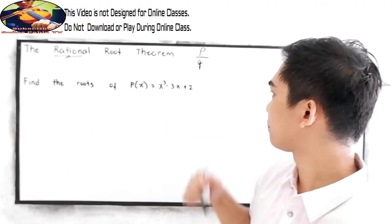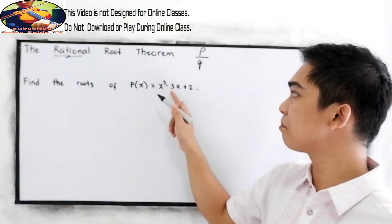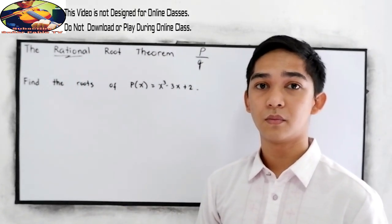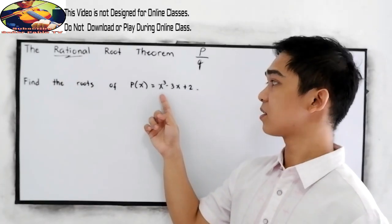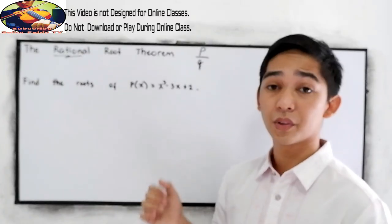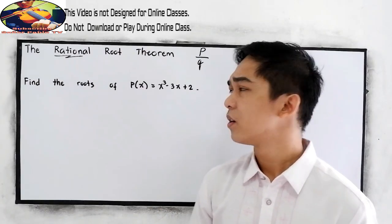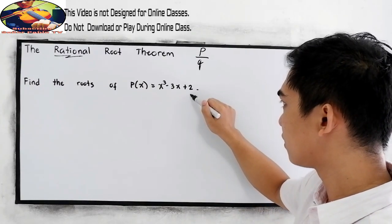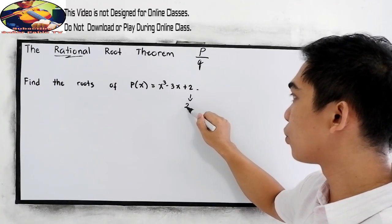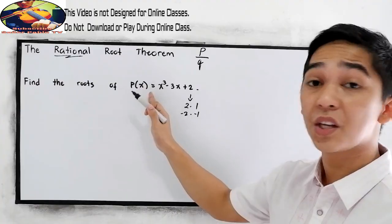Let's have this problem: Find the roots of P(x) = x³ − 3x + 2. In this case we don't have a denominator, and we cannot factor this using factoring techniques. So applying the Rational Root Theorem, the first step is to get the factors of our constant term. Our constant here is 2, so factors of 2 are: 2×1 and −2×(−1). And then get the factors of the leading term.